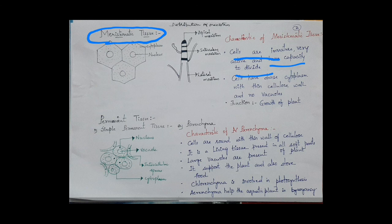Depending upon the region they are present, meristematic tissue is divided into three types. Apical meristem is present at the tip of the root and shoot, which increases the length of the root and shoot. Intercalary meristem is present at the base of the leaf or the internode.